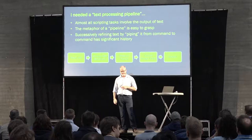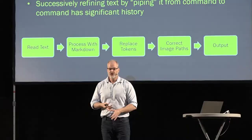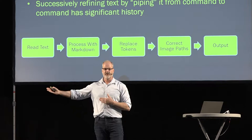Successively refining text by piping it from command to command has significant history — anyone who's worked on Unix or the Bash shell knows you can pipe commands from one to another. Here's an example of what a pipeline might look like: you read text in from somewhere, it's raw markdown so you turn it into HTML, you replace some tokens, correct some image paths, and then output it.